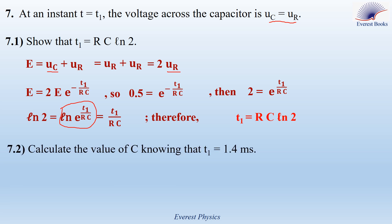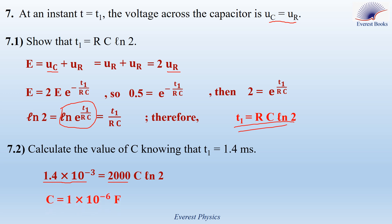Part 7-2: calculate the value of C knowing that T1 equals 1.4 ms. Using the equation T1 equals RC ln 2, replacing T1 by 1.4 times 10⁻³ seconds and R by 2000 ohms, we get C equals 1 times 10⁻⁶ farads.